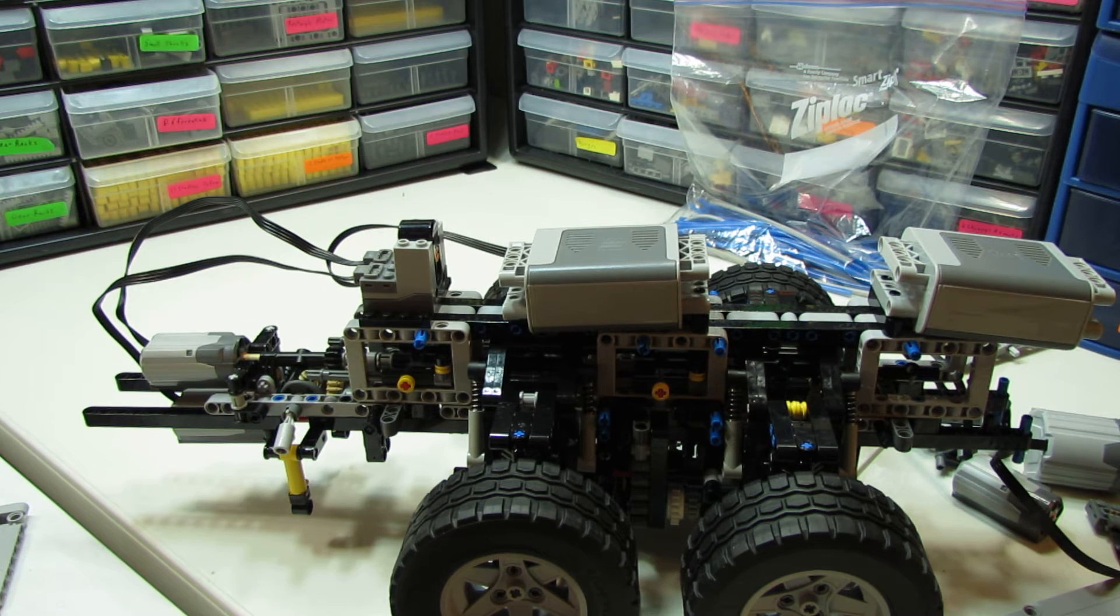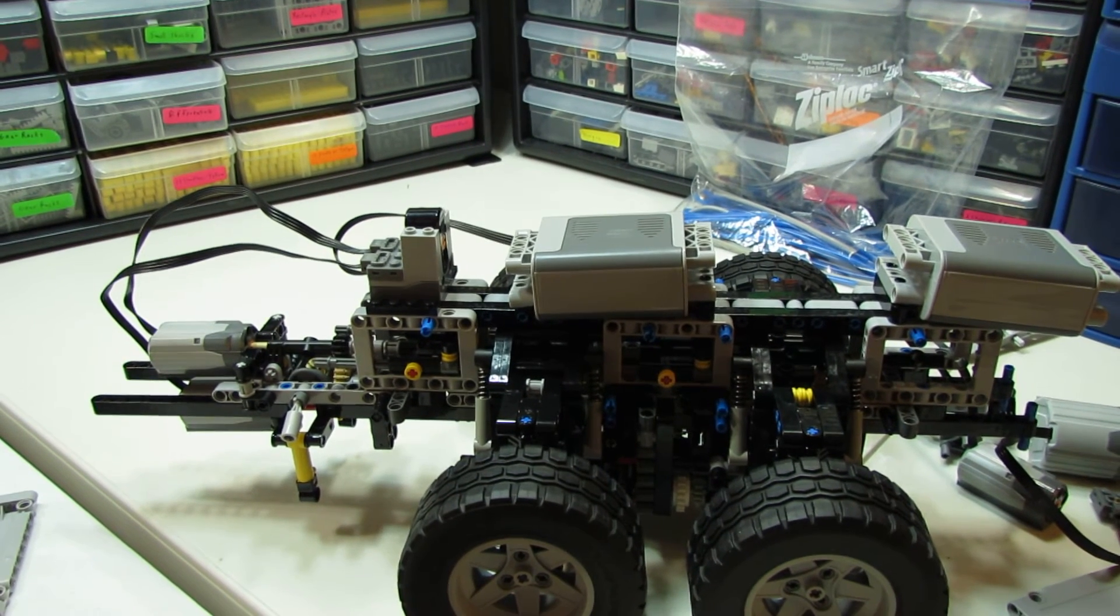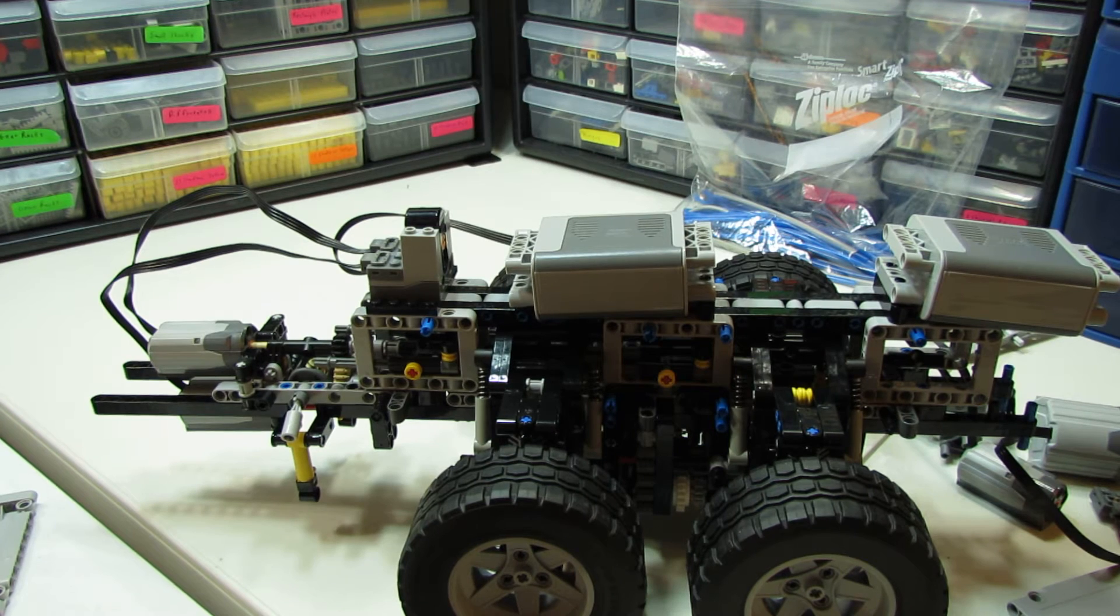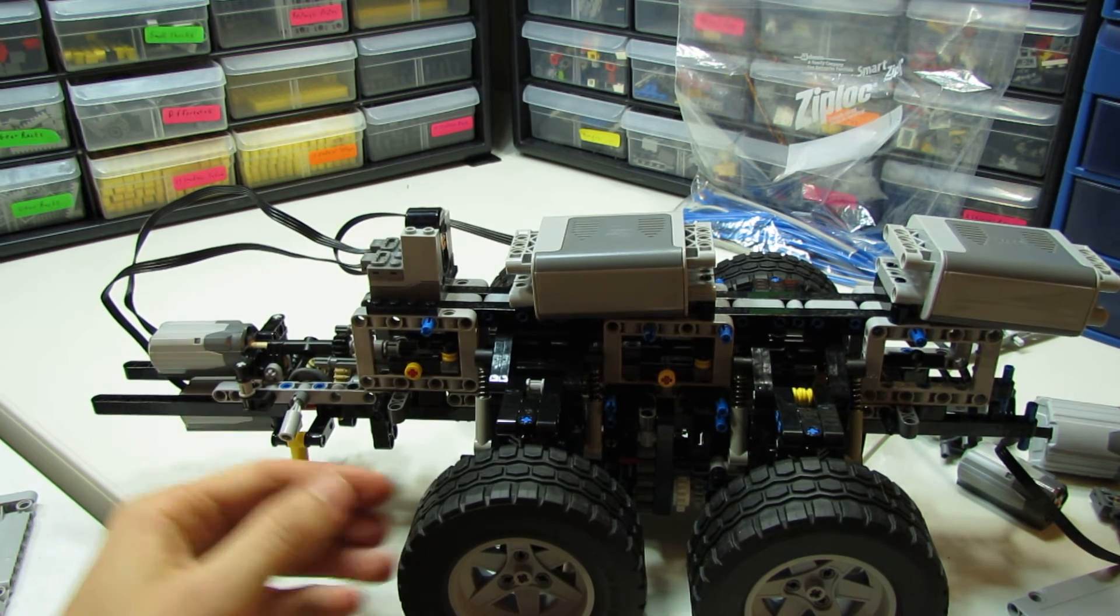So I think I'm a little spoiled by RC stuff. I have a Traxxas Summit with a Mamba Monster in it that can go 50 miles an hour. It's completely uncontrollable, because the vehicle's not designed for that, but that's my reference point of 50 miles an hour. So a quarter mile an hour just doesn't really do it for me. So that's the drivetrain.